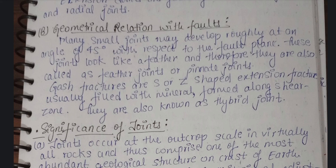Gash fractures are S- or Z-shaped extension fractures, usually filled with mineral. They form along a shear zone and are also known as hybrid joints. So, feather joints and hybrid joints represent two geometrical relations with folds. S- or Z-shaped extension fractures are called hybrid joints, and joints at 45-degree angles are called feather joints or pinnate joints.